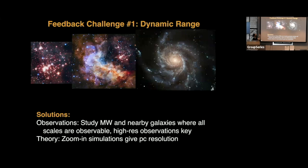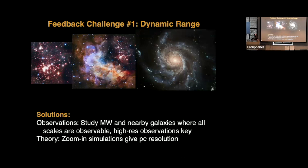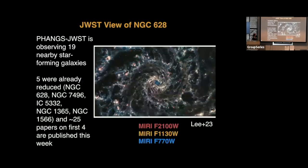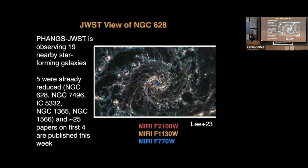In terms of solutions for dealing with this dynamic range observationally, it's good to study Milky Way and nearby galaxies where all of these scales are observable — down to individual stars, all the way up to large-scale structures. In terms of theory, getting parsec-scale resolution is important, and zoom-in simulations have helped a lot. Now we're in the era of JWST, giving us a new resolved view of infrared emission, and I wanted to mention some of the advances from the PHANGS-JWST survey.